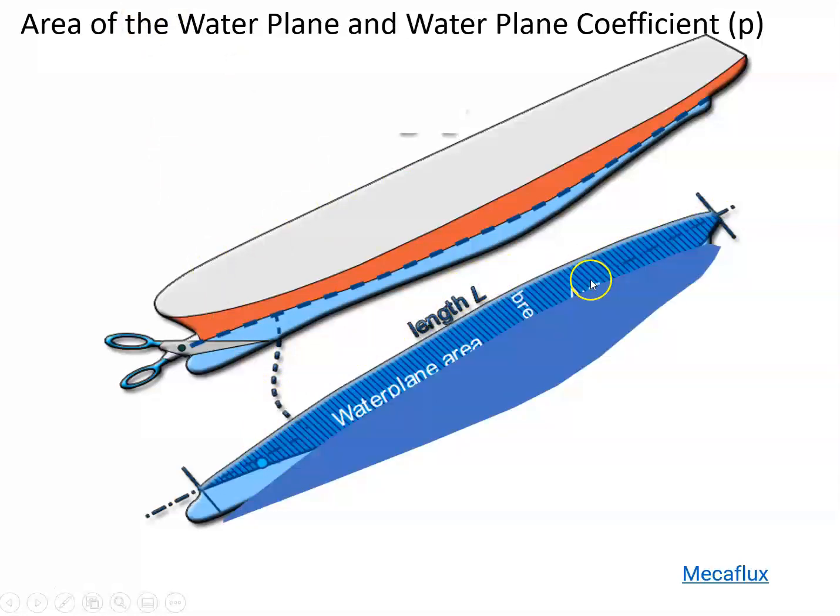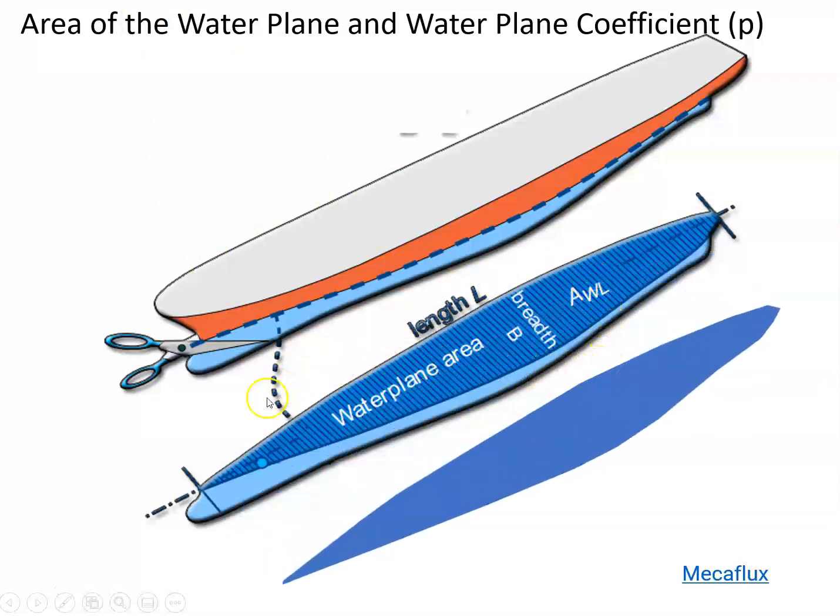I'm going to take that and slide it over here. This water plane area has a length and it has a breadth as well. There's a maximum beam here. It would be difficult for us to calculate this. We'd actually have to use calculus to do it probably. But we can actually calculate the area of this.